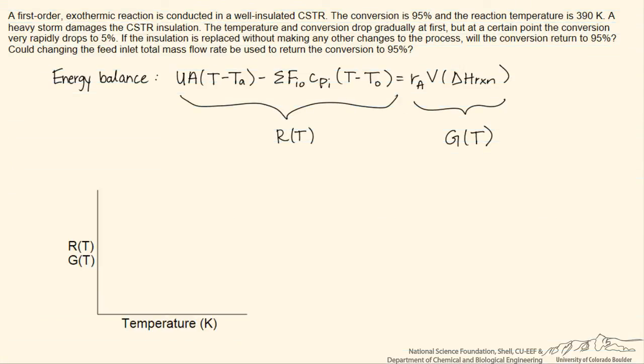We're going to expect that R is roughly linear with temperature. The amount of heat that we can remove increases as the temperature inside the reactor increases. That creates a greater driving force for the heat transfer out. It also allows the reactants to absorb more heat. So we expect that R increases as temperature increases for an exothermic reaction.